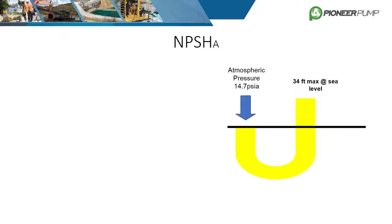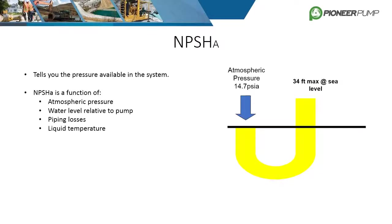While NPSHR is a known performance characteristic of a given pump and is provided by the pump manufacturer, NPSHA varies depending on what the suction side of the pump looks like. NPSHA is the pressure available in the system on the suction side. It is a function of the local atmospheric pressure or elevation, the static suction lift, friction losses in the piping, and the temperature of the fluid. It may help to think of NPSHA like a bank account, where atmospheric head is your monthly paycheck, and static lift, pipe losses, and fluid temperature are your utilities and expenses.